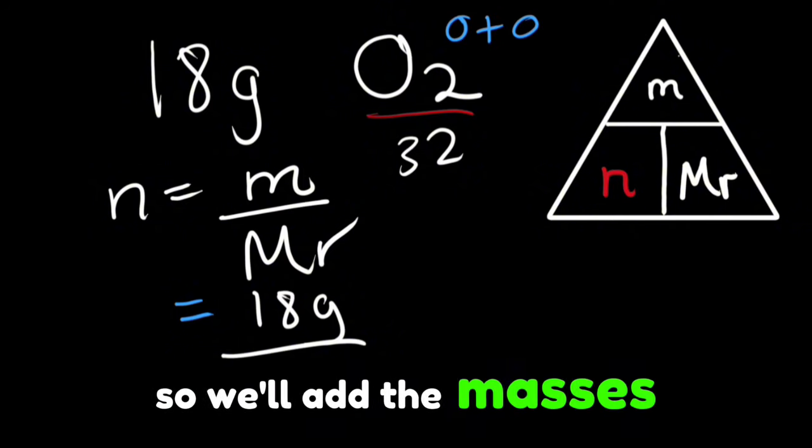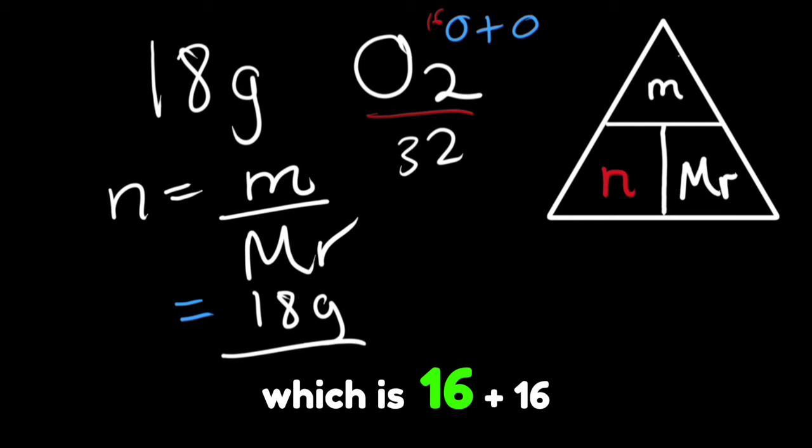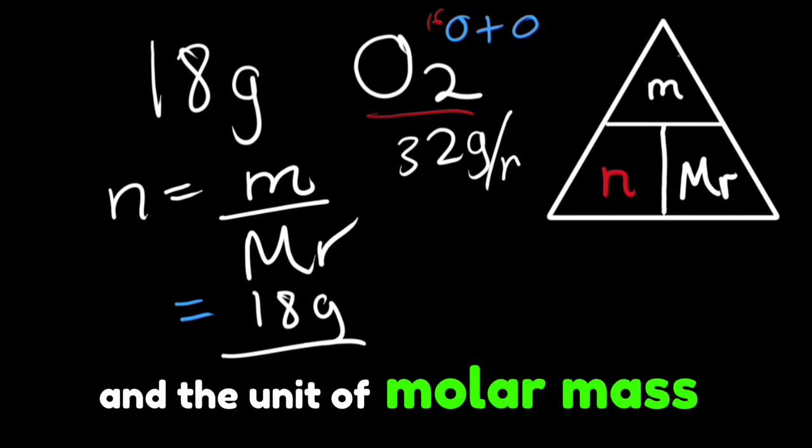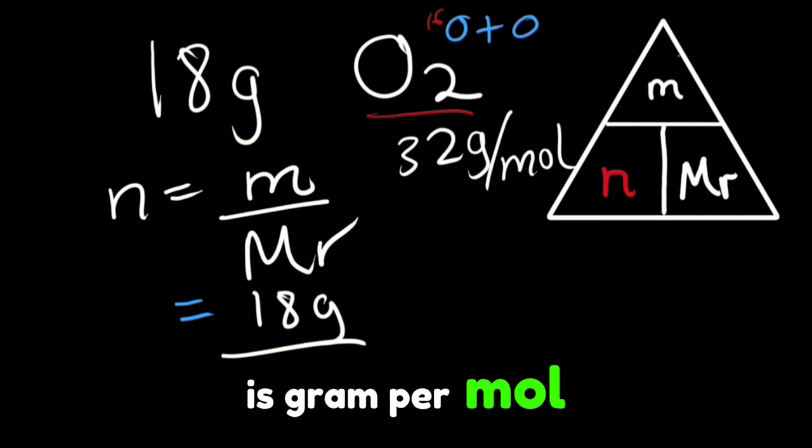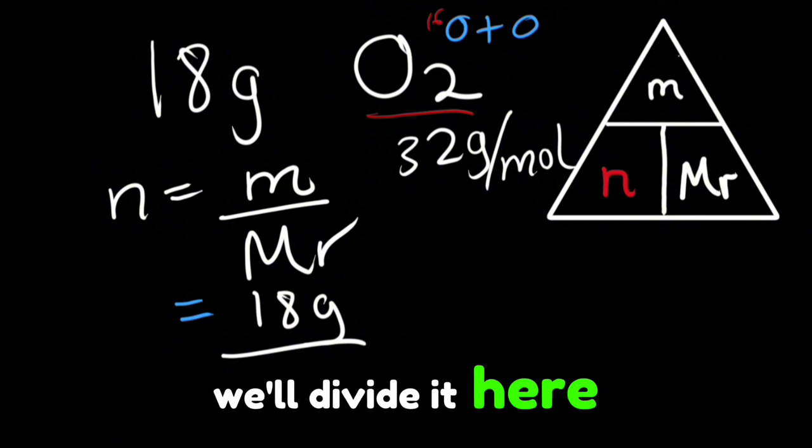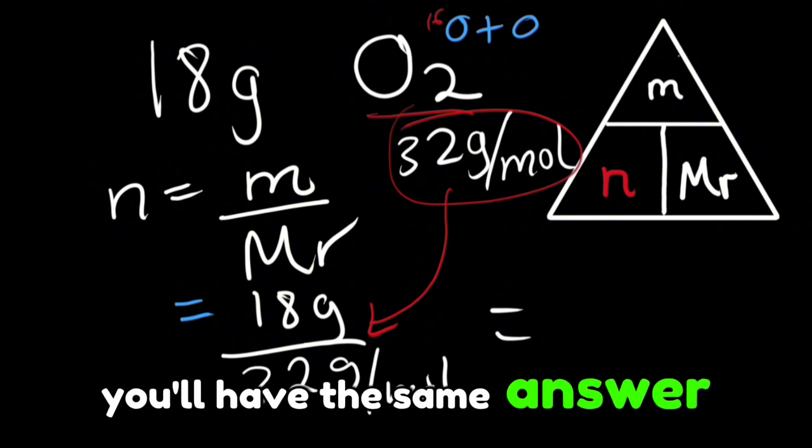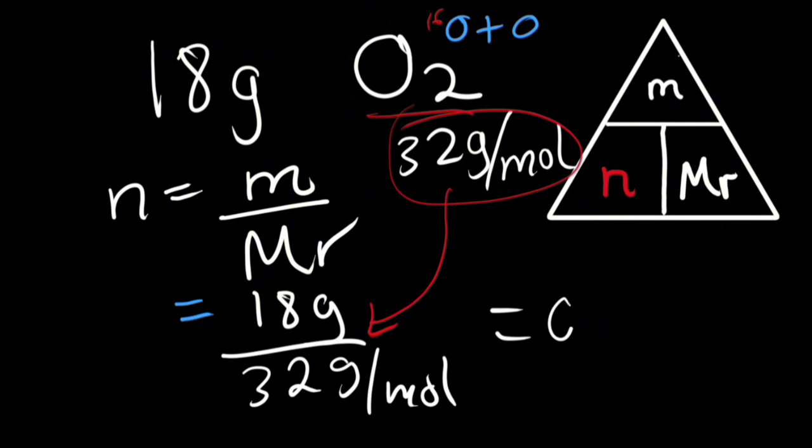So we'll add the masses of these oxygens which is 16 plus 16 to give us the molar mass as 32, and the unit of molar mass is grams per mole. So we will divide it here, we will put this in the place of molar mass. So we'll have 18 grams divided by 32 grams per mole. Now calculate this, you will have the same answer as 0.56 moles.